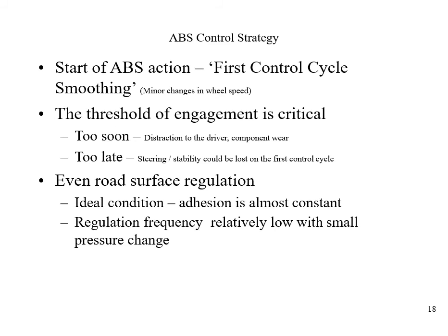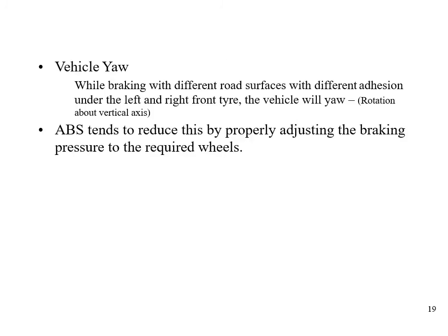The strategies at the start of the ABS section: the first control cycle involves smoothing minor changes in wheel speed. The threshold of engagement is critical — too soon causes distraction to the driver; too late and steering or stability could be lost. On an even road surface under ideal conditions, regulation frequency is relatively low with small pressure changes. During braking on different road surfaces, with different adhesion under the left and right front tires, the vehicle will tend to rotate about a vertical axis — yaw — which ABS tends to reduce.